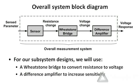In block diagram form, our system essentially consists of three pieces. The first part is our sensor: it takes the sensed parameter — either temperature change or deflection — and converts that to a resistance. That block is either our thermistor or our strain gauge.